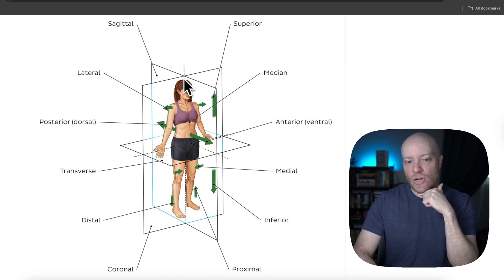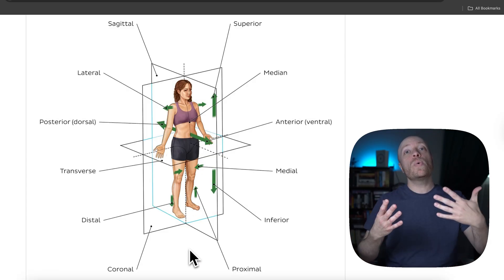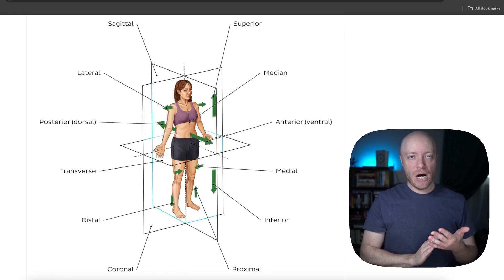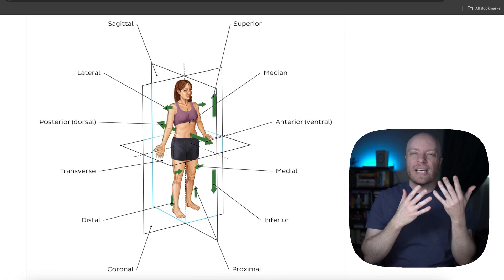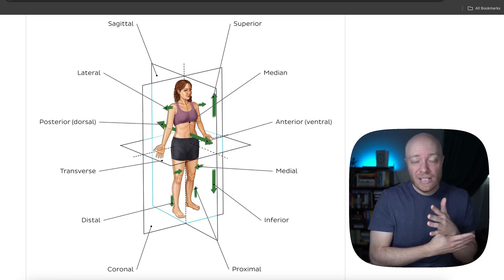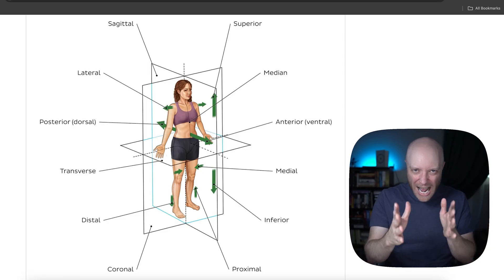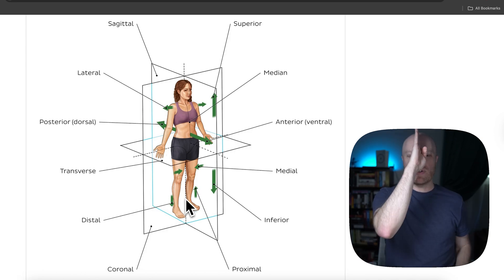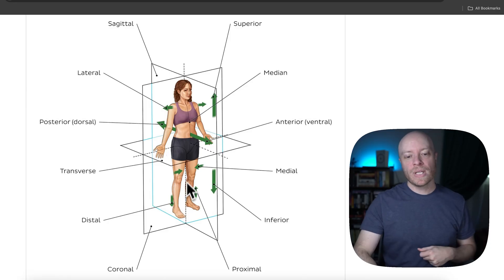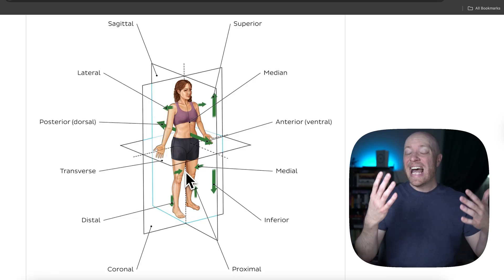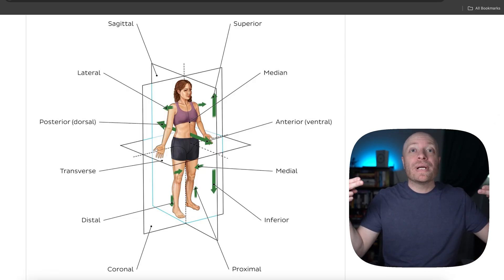Lateral and medial also assume a midline. You can see this dotted line going down the center of the body — that shows there is a midline. You don't always have to assume the midline is in the exact center of the body; you could define a midline of the hand, for instance. You can make a midline wherever you want and then use medial and lateral relative to that line, but for now our focus is purely on the center of the body.